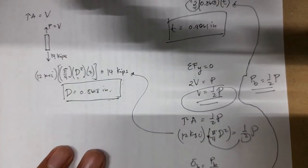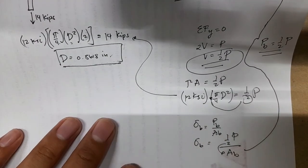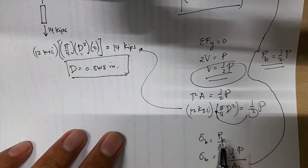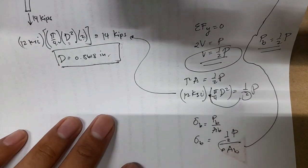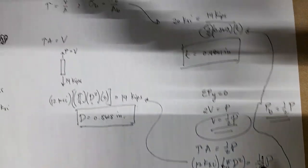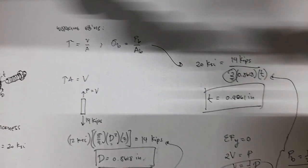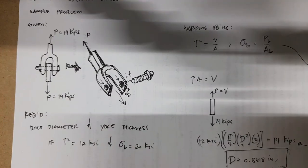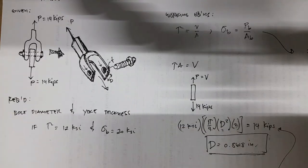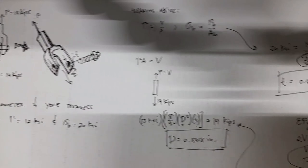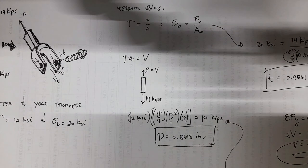Just make sure you only times 2 either on the area or on the force — not both. This is just a case of double shear combined with bearing and shear stresses.